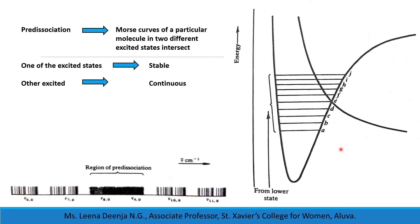Suppose a transition takes place from some lower state into levels named A, B, or C. A normal vibrational electronic spectrum occurs with rotational fine structure. Two such bands we can see here.